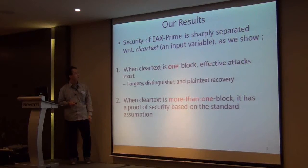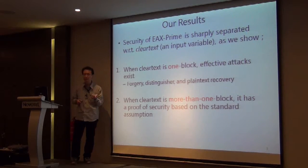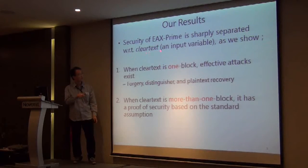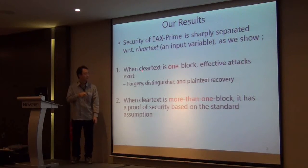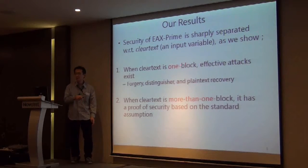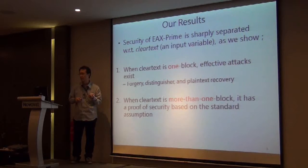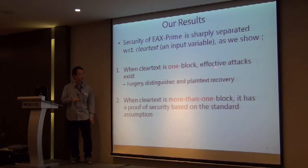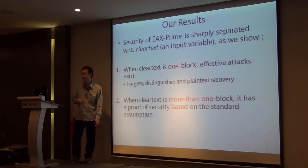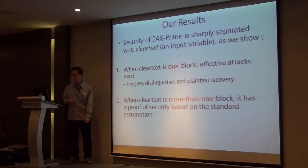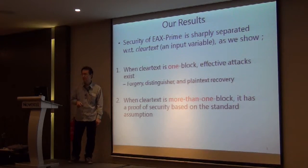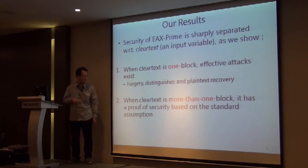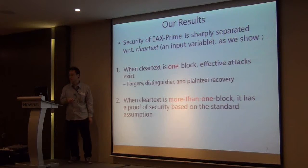In this talk, I would like to describe that the security of EAX prime is sharply separated with respect to the length of an input variable called cleartext. The first result is that when the cleartext is only one block — at most 128 bits in the standard setting — we can mount effective attacks to perform forgery and plaintext distinction, and even plaintext recovery in some special scenarios. On the positive side, we also show that when the cleartext is more than one block — more than 128 bits — it recovers a proof of security based on the standard assumption of the internal block cipher.